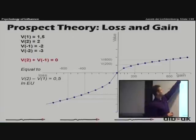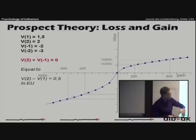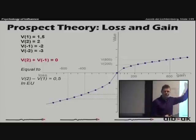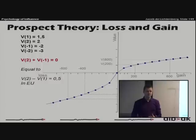So for example, if you have the value of one, and of course it should be said that it's very steep in the beginning, the value of one might equal 1.5, whereas the value of two is only equal to two. But these guys are looking at the losses as well. So the value of minus one might be equal to minus two, whereas the value of minus two, because we have diminishing there as well, might be equal to minus three.